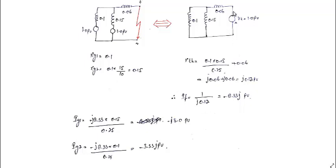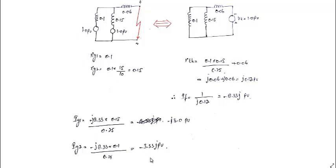Using the current divider rule: IG1 = fault current × 0.15/(0.1+0.15) = minus j8.33 × 0.15/0.25 = minus j5.0 per unit. IG2 = minus j8.33 × 0.1/0.25 = minus j3.33 per unit. You can verify: 5.0 + 3.33 = 8.33, which checks out.